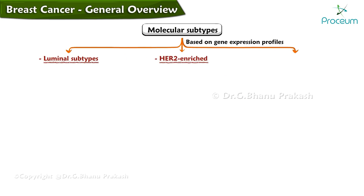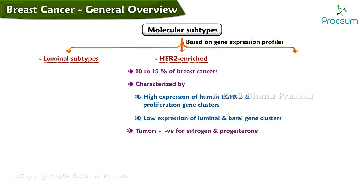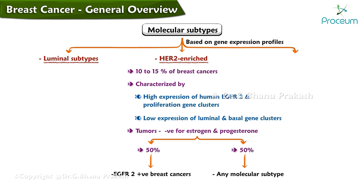The HER2-enriched subtype makes up about 10 to 15 percent of breast cancers and is characterized by high expression of HER2 and proliferation gene clusters, and low expression of the luminal and basal gene clusters. These tumors are often negative for estrogen and progesterone. Only half of clinical HER2-positive breast cancers are HER2-enriched on molecular profiling; the other half can include any molecular subtype but is mostly made up of HER2-positive luminal subtypes.